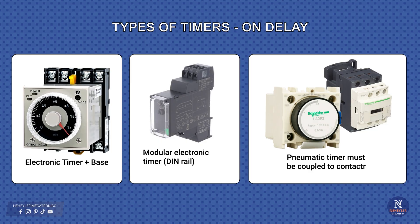In the center is the modular electronic timer for DIN rail, more compact and precise, although a little more expensive. And on the right, a pneumatic timer coupled to a contactor, more economical but less precise, used in simple applications.